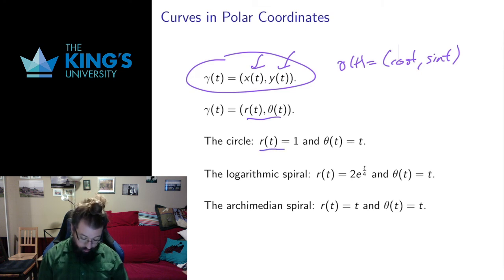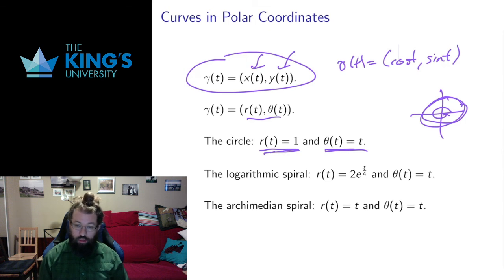But if I instead say that the radius is constant and the angle is just changing linearly, that's also going to give me a circle. I'm going to go around the angle, the angle is going to go around, I'm going to get all these points where the radius is fixed. So I can describe the same shape as a Cartesian parametric curve or as a polar parametric curve with the radius equal 1 and the angle equal T.